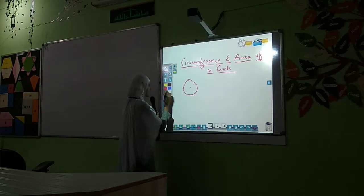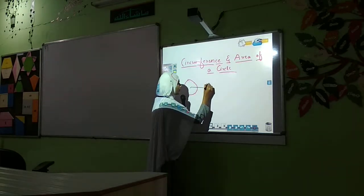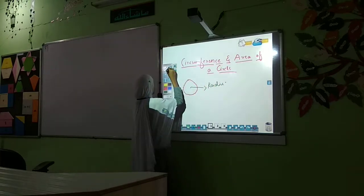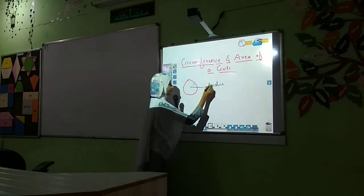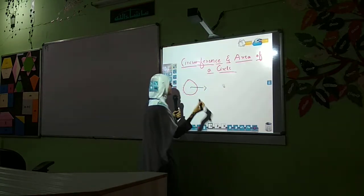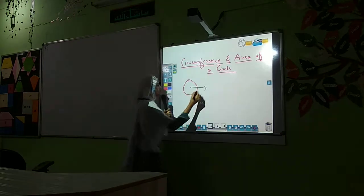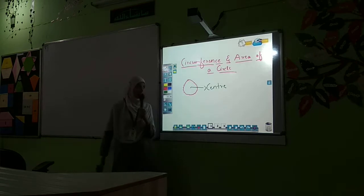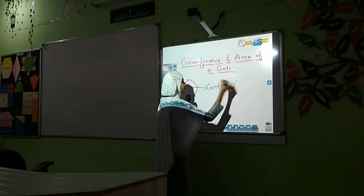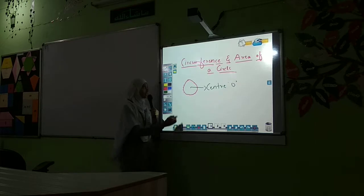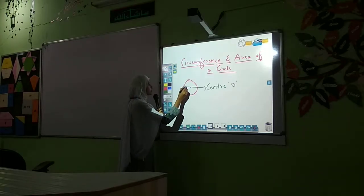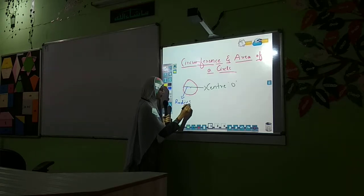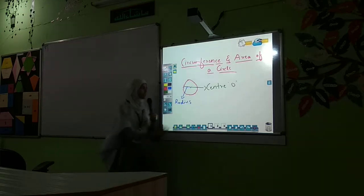This fixed point is called the center of the circle. It is generally denoted as O. The equidistance or fixed distance from the center to any point on the circle is known as the radius of the circle, and it is denoted as small r.